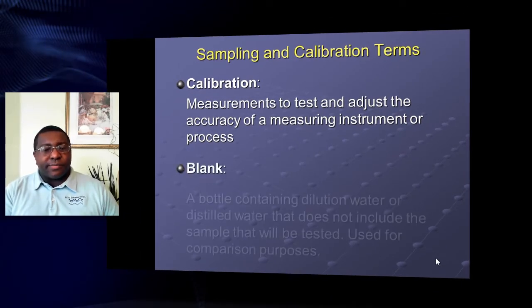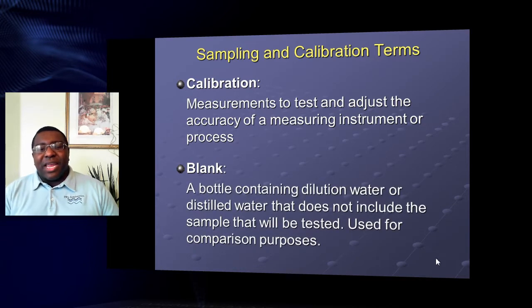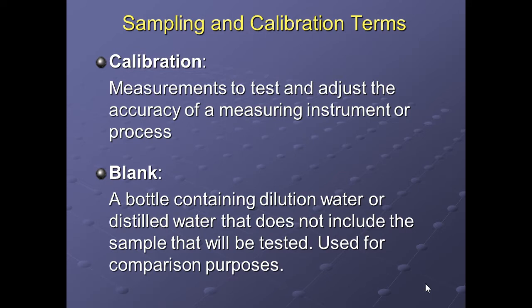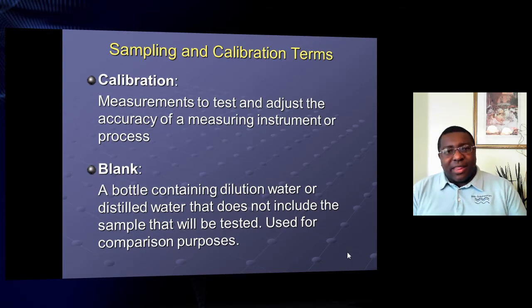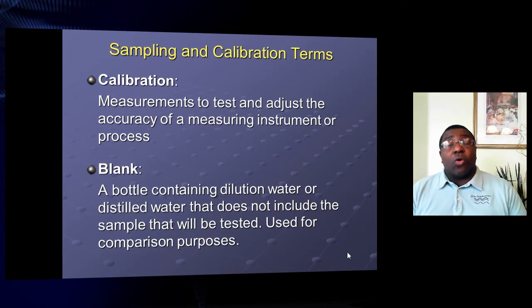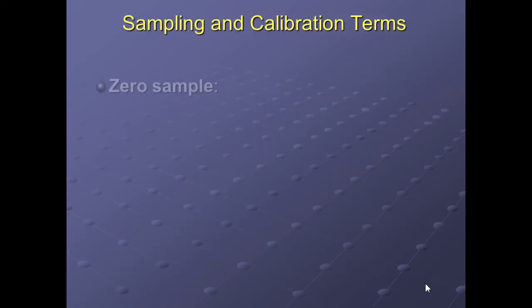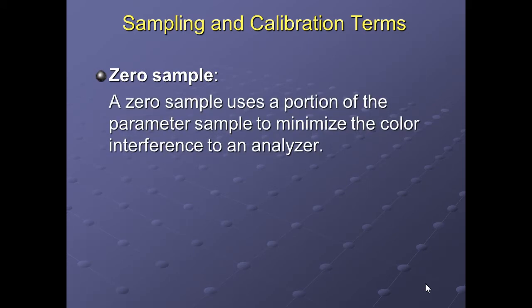A blank is a bottle containing dilution water or distilled water that does not include the sample to be tested — it's for comparison purposes. Most meters need one reference sample cell versus the sample cell that has the sample and reagent. The machine gives you a reference from one cell to the next so you know there's a reaction, and that amount of reaction tells you what that sample concentration is.